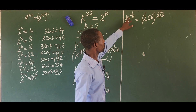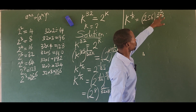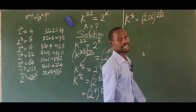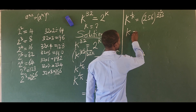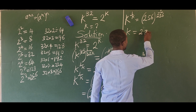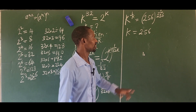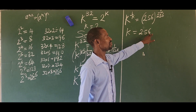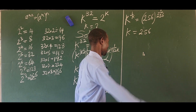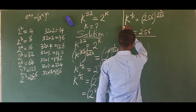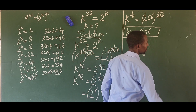So we now have k raised to 1 over k equal to 256 raised to 1 over 256. This means k is equal to 256. The mistake I made in the previous video was putting k equal to 8. So 256 is the value of k that satisfies this challenge.